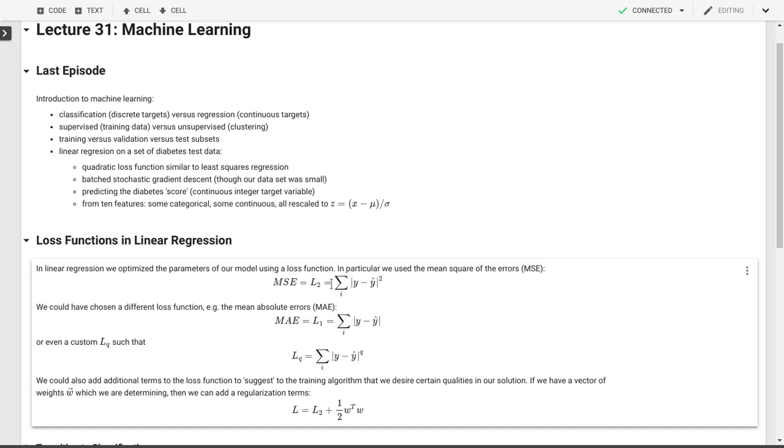That's what we call L2, a second order loss function. We could have chosen a different function, we can use the mean of the absolute error so now instead of squaring this absolute difference we just use the absolute difference between y and y hat and just sum that. That's our L1. We could even use a custom LQ where we raise this to the power Q where Q could be a half, Q could be three, Q could be one and a half, any of those values and some of those are going to have certain desirable properties.